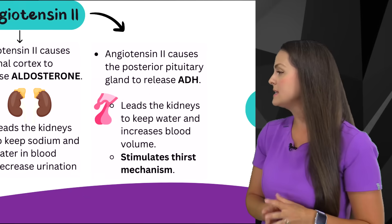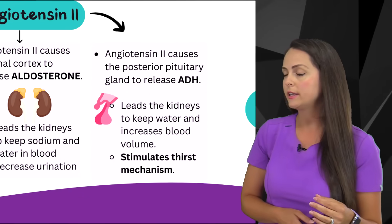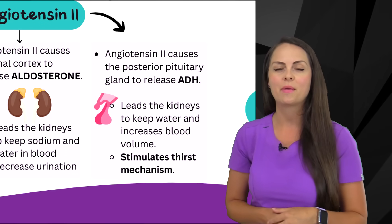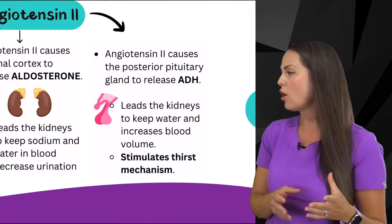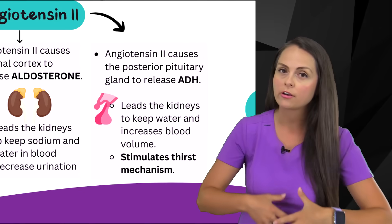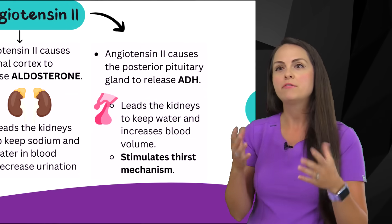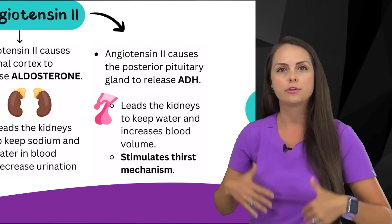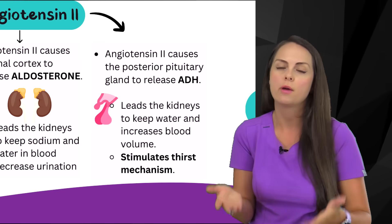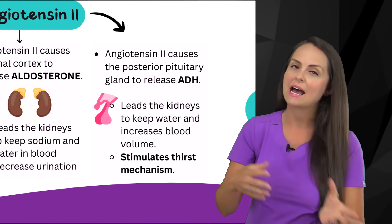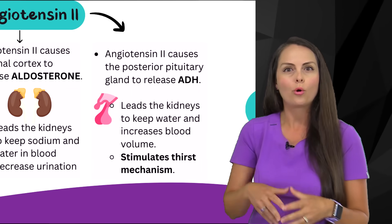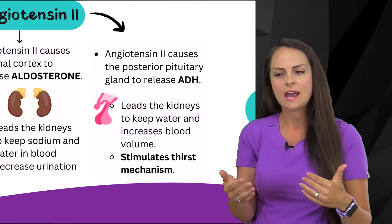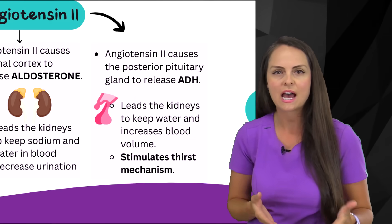Another thing angiotensin 2 does is it causes the posterior pituitary gland to release a hormone called ADH, which is anti-diuretic hormone. This causes the kidneys to keep water, and whenever we keep water, we're going to increase blood volume. If you're familiar with how diuretics work, we give patients diuretics to help them urinate extra fluid out of the body — used to treat fluid volume overload. Well, if we're having a substance in our body called anti-diuretic, anti means works against, so we're working against that concept. ADH is going to cause your body to keep water; it has an anti-diuretic effect.